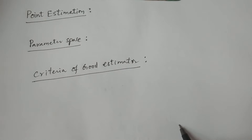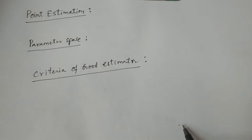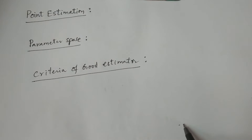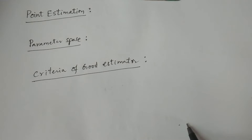Similarly, whatever the population parameters which are not specified, not given — in such a case, we have to use the method of estimation. We have to estimate the population parameter by some particular sample statistic, sample value, or a function of sample observations. Such kind of procedure is known as the theory of estimation. The method of estimating population parameters by using sample observations is nothing but the theory of estimation, in which there are two kinds of topics.